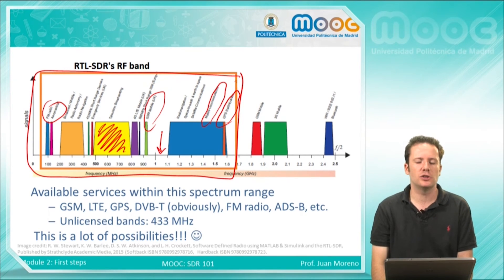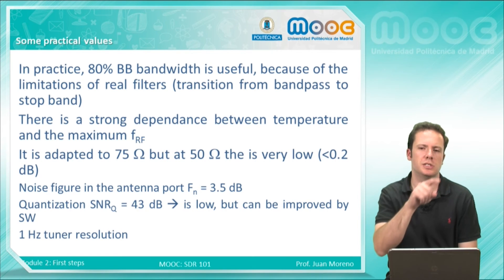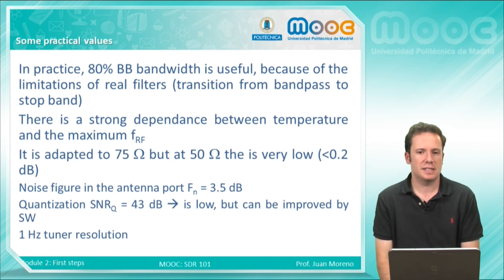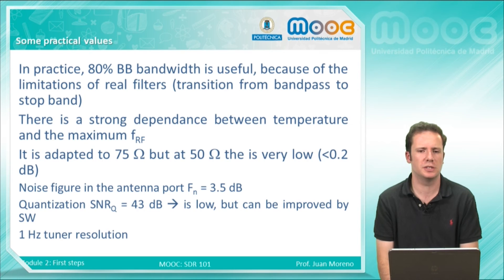Some practical values about the RTL-SDR: 80% of the baseband bandwidth is useful, due to the limitations of real filters and the smooth transition from bandpass to stopband. There is also a strong dependence between temperature and the maximum frequency. The device is adapted to 75 ohms, but the mismatch loss at 50 ohms is very low. The noise figure at the antenna port is 3.5 dB. The quantization signal-to-noise ratio is 43 dB — which is low but can be improved by software. The channel resolution is 1 Hz.